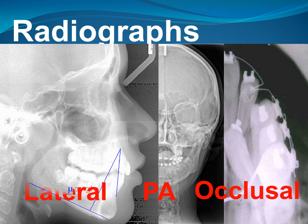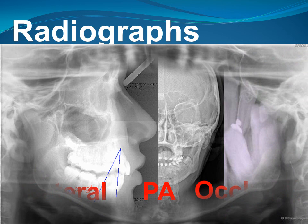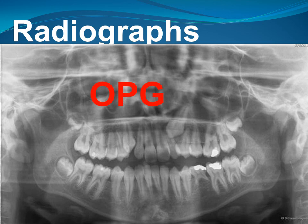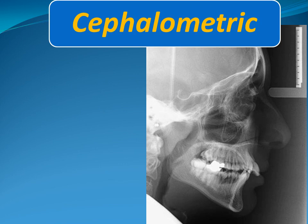The other type of radiograph is the lateral cephalometric radiograph, which is a specialized view of the facial skeleton and the cranial base from the lateral aspect. Another type is the orthopantomograph or OPG, which can be used to assess root resorption during orthodontic treatment, as well as supernumerary or impacted teeth. These are the most common types of radiographs used during orthodontic treatment planning.